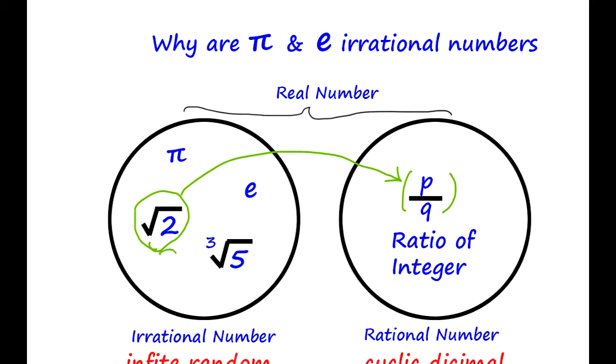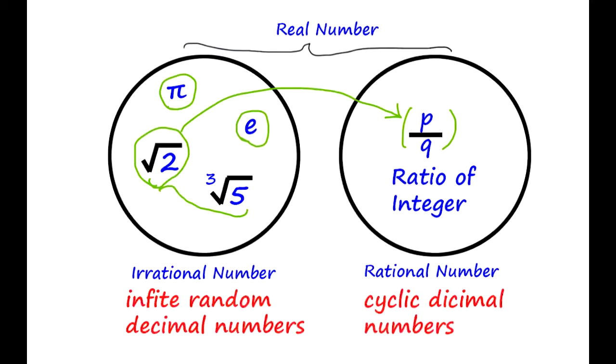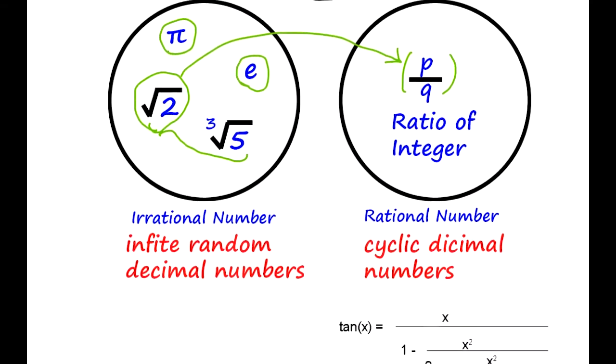I'll show you how to prove that they are also irrational numbers. When you look at the irrational number in the decimal number expression, it's going to be an infinite random number. Like, you know, e is 2.7 and so on, pi is 3.14.